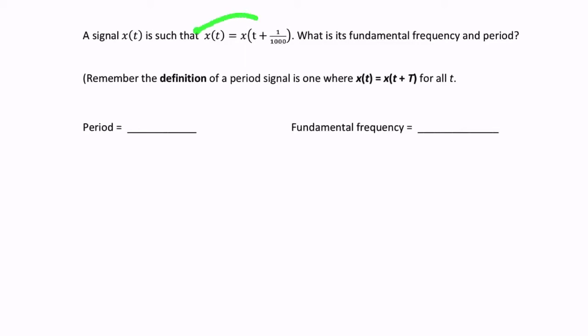In this question, we're given some information about a signal x of t. So we're told that x of t is equal to x of t plus 1 over 1000. And we're asked for two things, the fundamental frequency and the period.